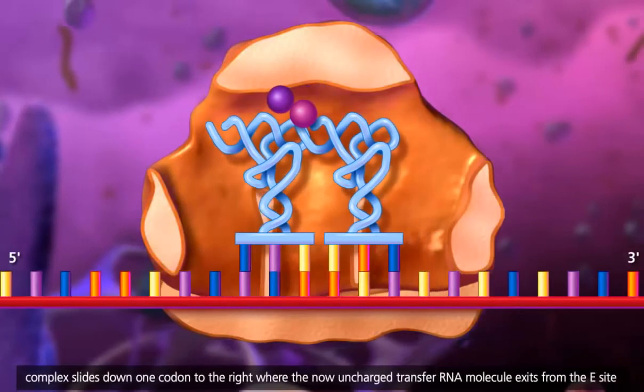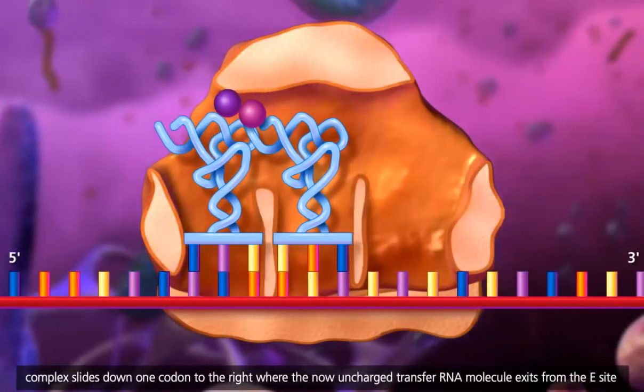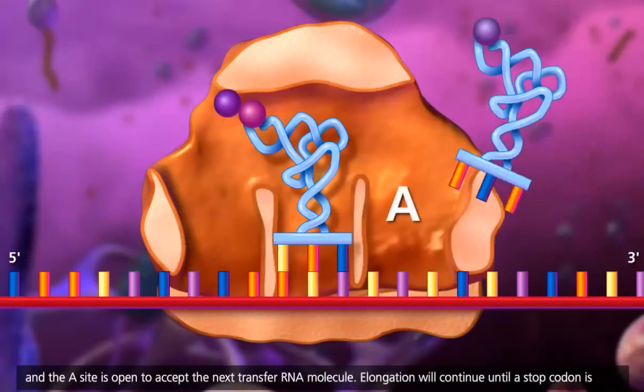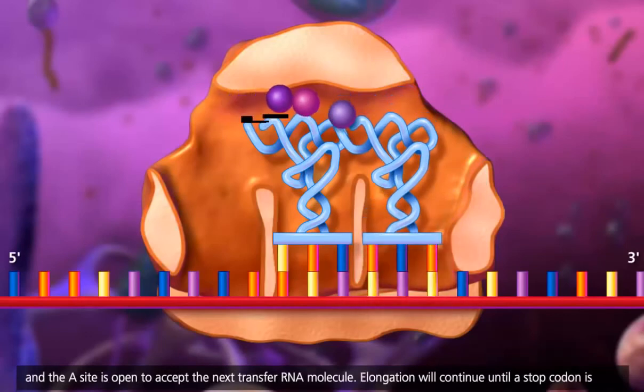The complex slides down one codon to the right where the now uncharged transfer RNA molecule exits from the E site and the A site is open to accept the next transfer RNA molecule. Elongation will continue until a stop codon is reached.